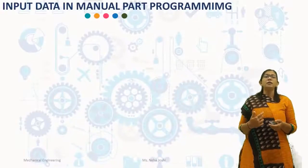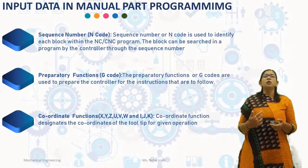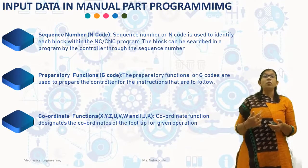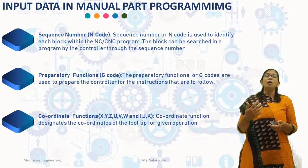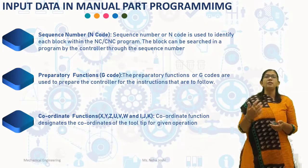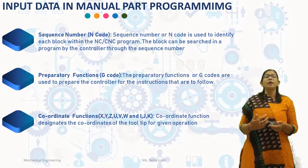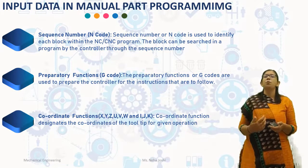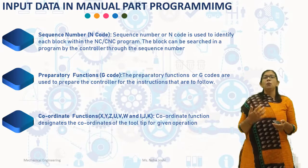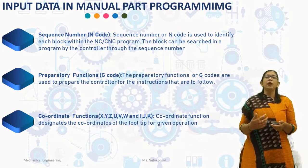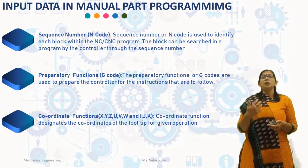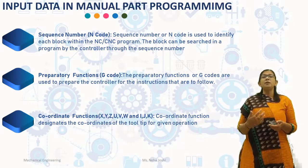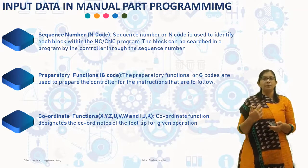The first is sequence number, which is also known as N code. The sequence number or N code is used to identify each block within the NC/CNC program. The block can be searched in a program by the controller through the sequence number. The sequence number is designated by the letter N.